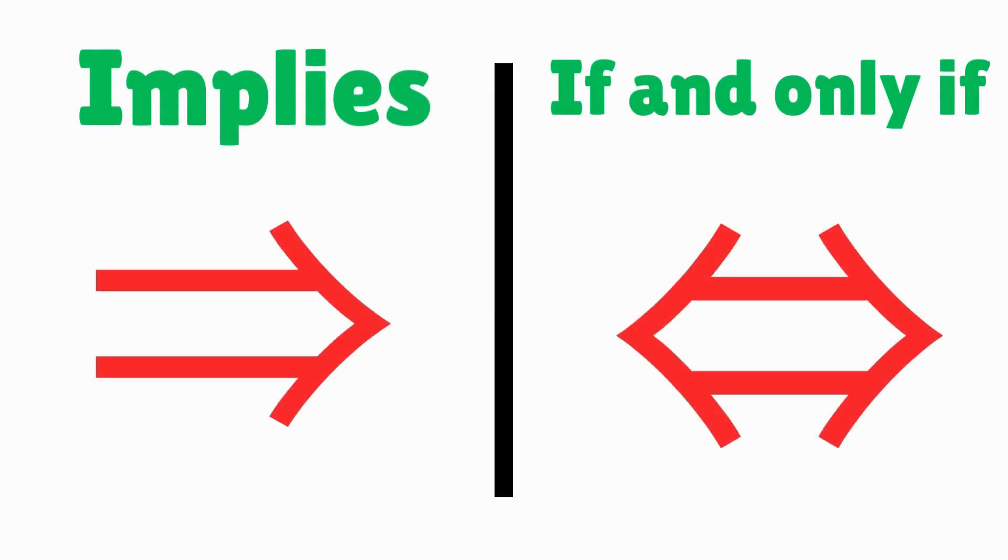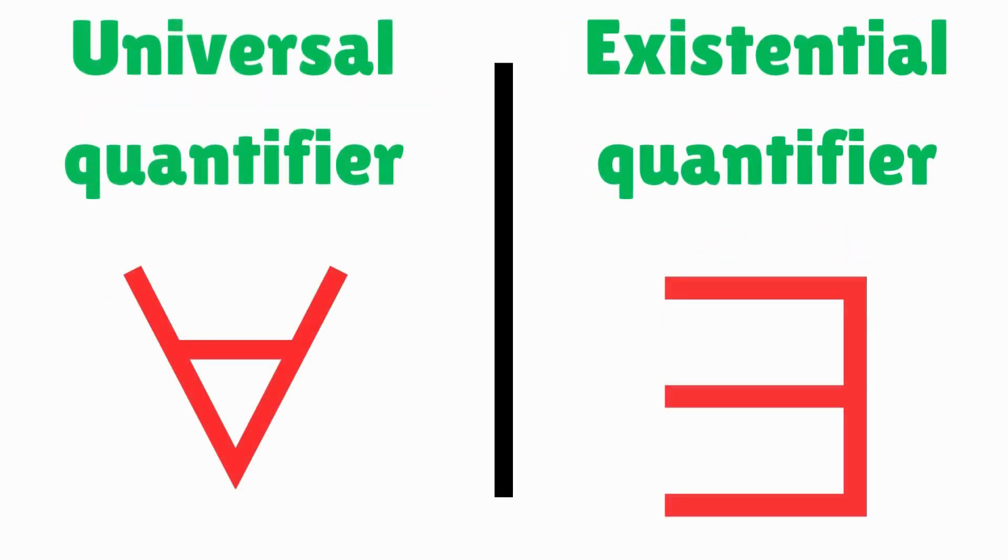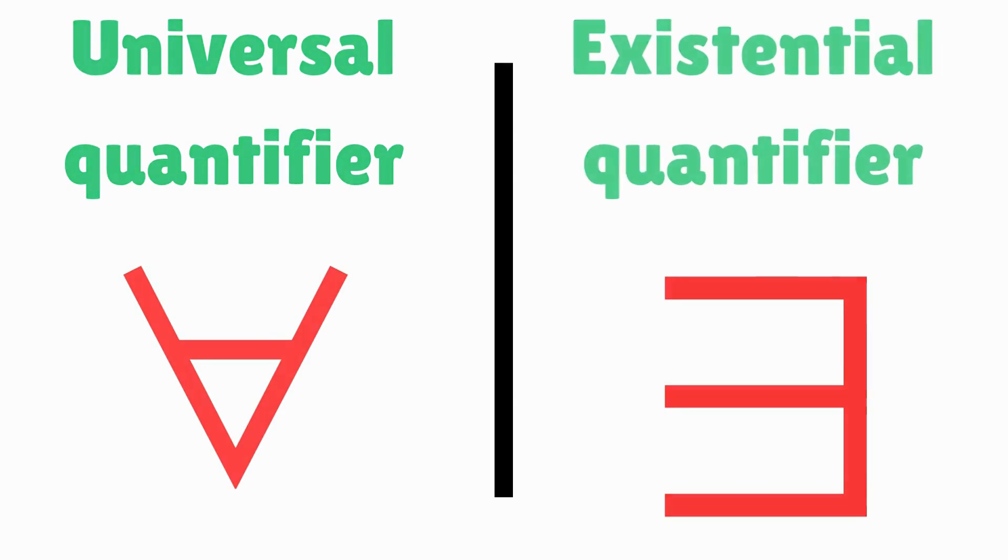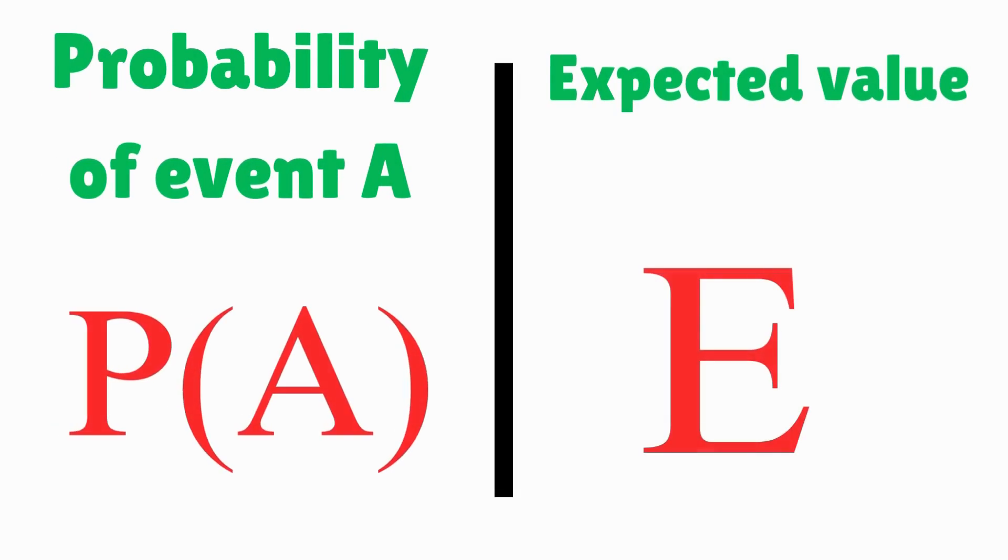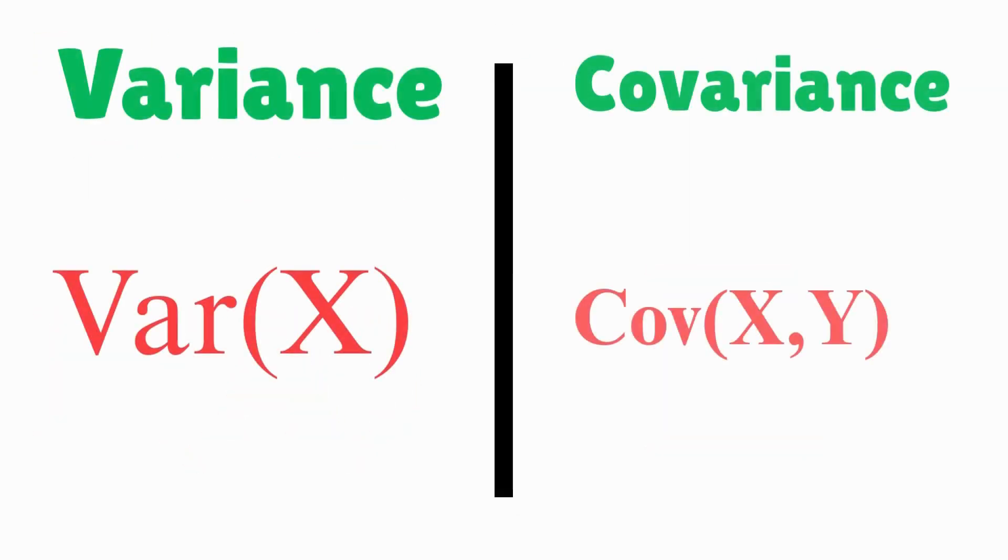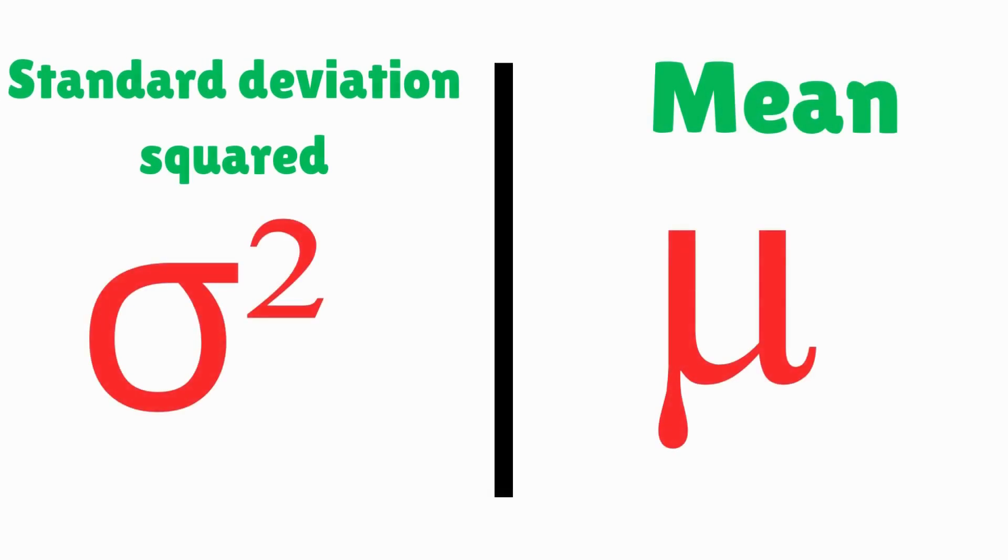Implies, if and only if, universal quantifier, existential quantifier, probability of event A, expected value, variance, covariance, standard deviation squared.